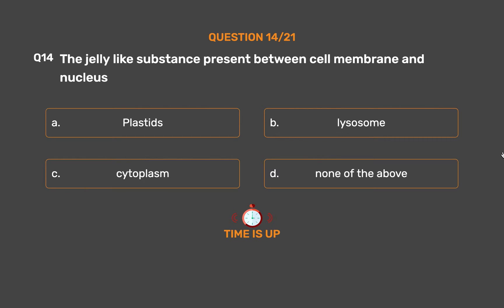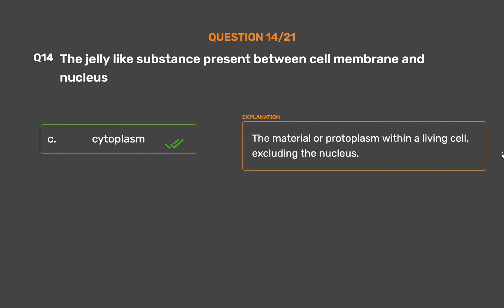The correct answer is Option C: Cytoplasm — the material or protoplasm within a living cell, excluding the nucleus.